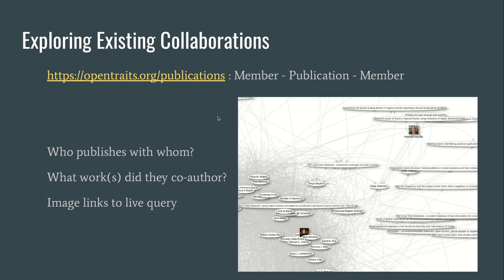We can also look at collaboration networks. Here we see a map between individual members of the Open Trades Network and their publications, with a link if they have been co-authors on the same publication and an image if there is one in Wikimedia Commons. This is a live graph — you can dive in, explore it, zoom in and out, move nodes around to see who's connected to whom, and consider what works they co-authored. You can think about who might review someone's work, who might be a mentor, or who might be teaching a method to someone else.